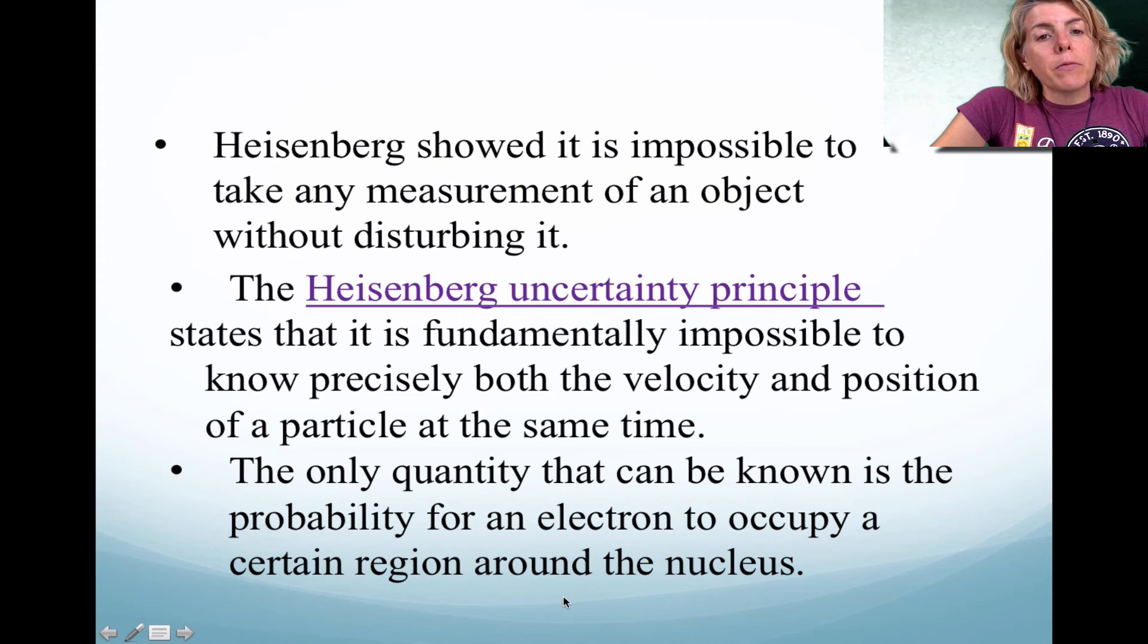So there was another man by the name of Heisenberg, and he used mathematics to show that it was impossible to measure an object without disturbing it. So he created what we call the uncertainty principle, and what scientists found is if you probe an electron, you can't know the velocity and position of that electron at the same time. You could either know the position or the velocity.